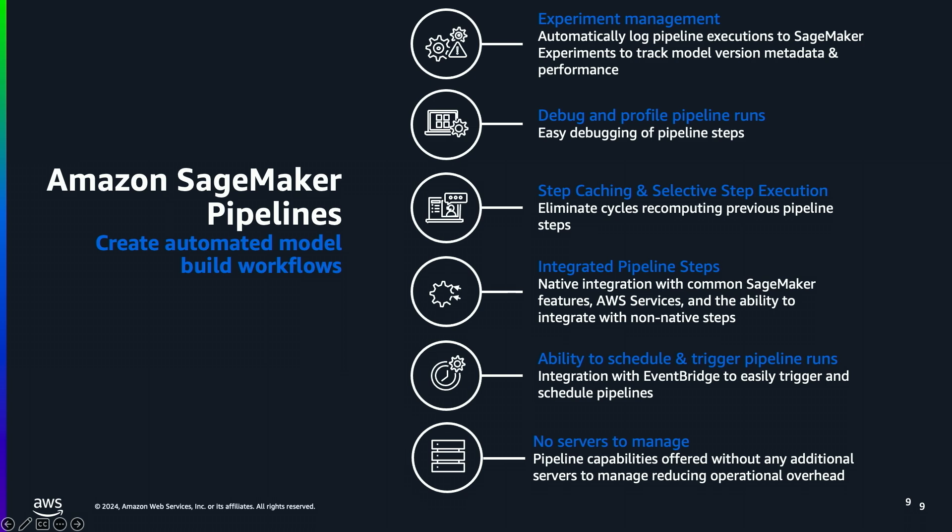Which brings us to SageMaker Pipelines. Pipelines allows you to programmatically create pipelines using either the SDK or by authoring pipelines using the pipeline definition JSON schema. A few things to highlight are the step caching and selective step execution capabilities, which allow you to either automatically skip steps based on cached results using the same input, or explicitly identify steps to skip. You can also schedule or trigger your pipeline based on specific events through native integration with EventBridge. One key benefit is there's no servers to manage, reducing operational overhead and cost, since with pipelines you only pay for the compute used in the steps within your workflow.